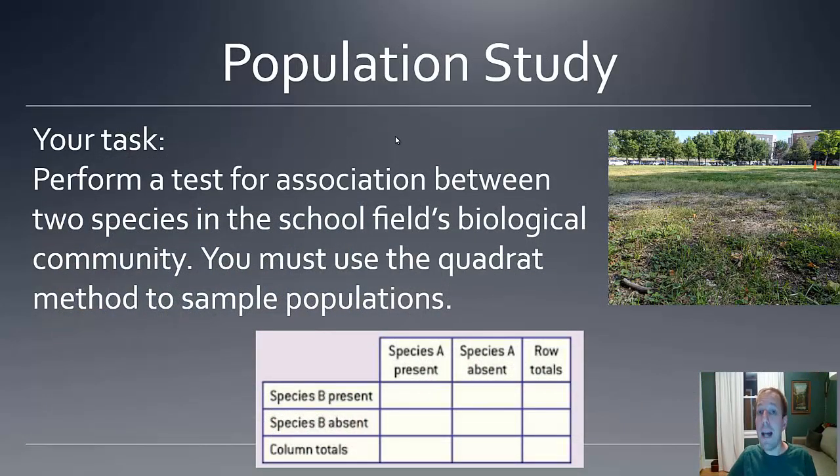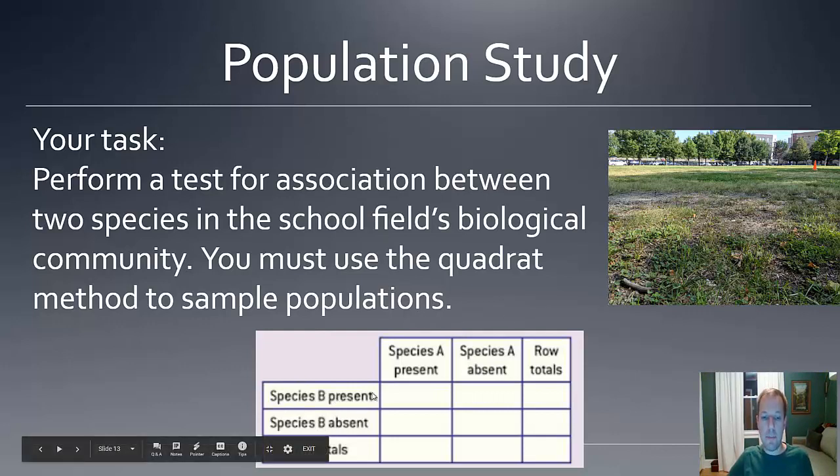You're going to be applying the quadrat method to the population study. Your task in the study is to perform a test for association between two species in the school field's biological community. You have to use the quadrat method in order to do your population sampling. A test for association is going to look for a relationship, whether or not you can establish a relationship between two species. When you lay out your quadrat, you would look for the presence of those two species, and you would simply tally how often do they appear together.